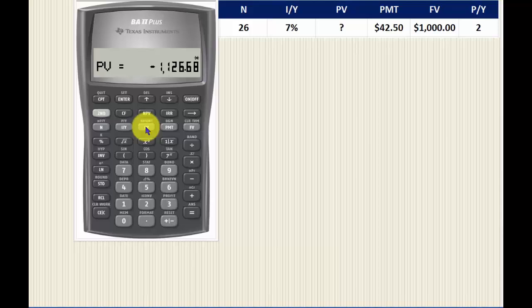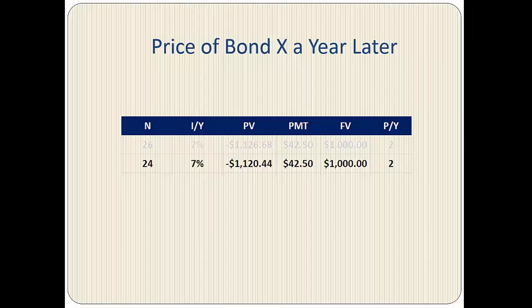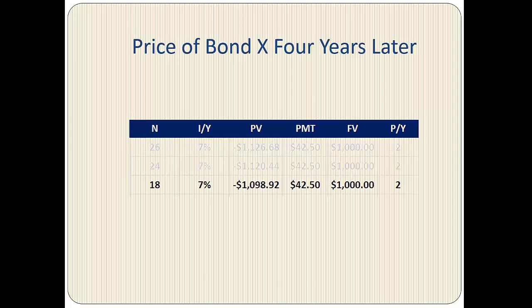A year later, 12 years or 24 compounding periods are left to maturity. To find the price of the bond a year later, we simply replace N with 24 and recalculate the present value to be $1,120.44. Four years later, nine years or 18 semi-annual periods are left to maturity. We replace N with 18 and recalculate the present value to be $1,098.92.